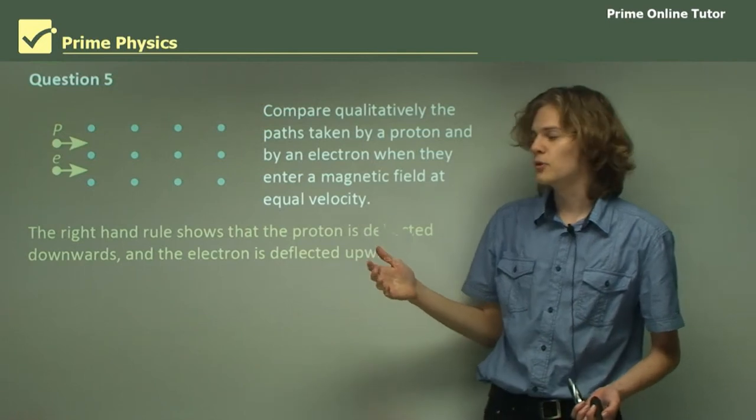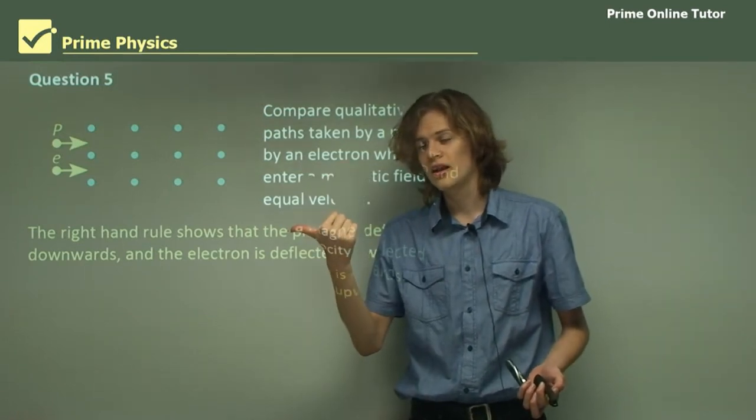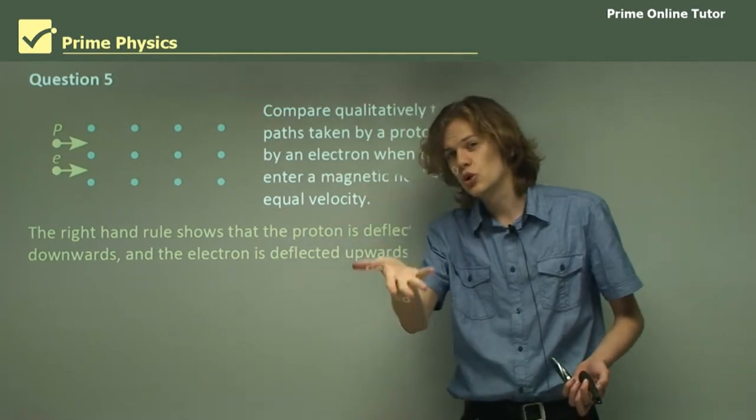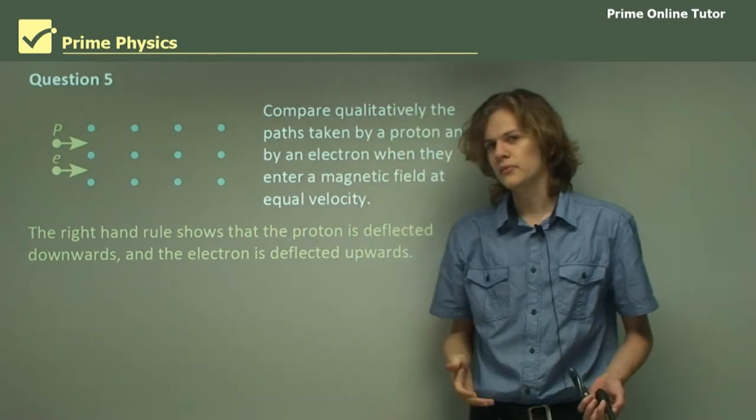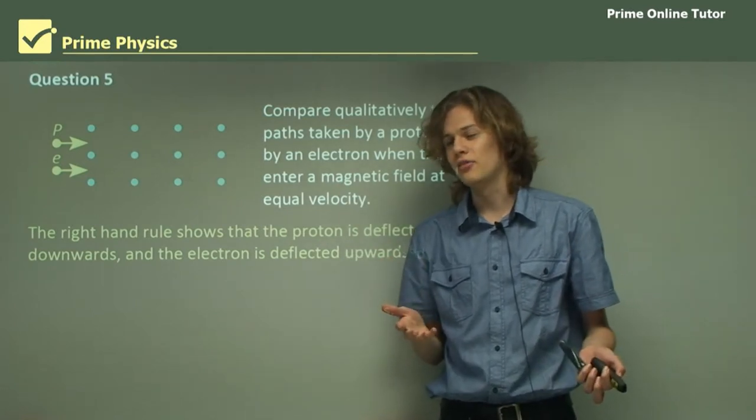The electron, on the other hand, has a positive charge velocity in the other direction, because it's a negative particle. The magnetic field is the same, and so it's deflected upwards. But we can't really draw their paths until we know something about the radius of the path they're following.